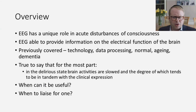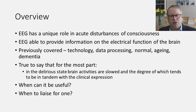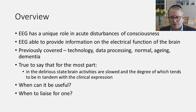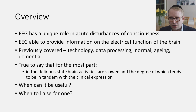In terms of an overview, we should all know that an EEG has a very unique role in looking at the acute disturbances of consciousness. That's particularly for the epilepsies, but it's also able to provide us very useful information on the electrical function of the brain in near instantaneous fashion. We've previously covered the technology behind this, data processing, what happens in the normal EEG, aging, and the dementias.